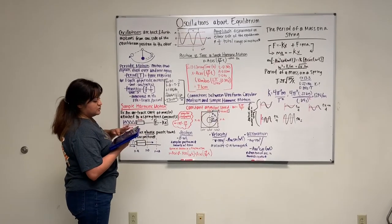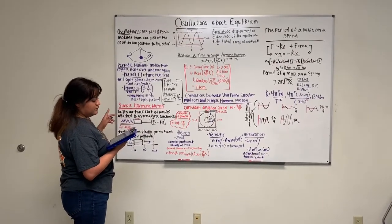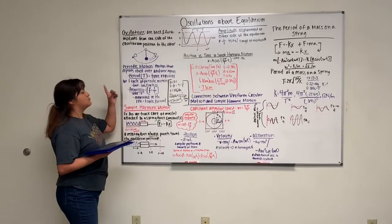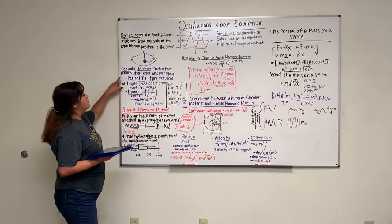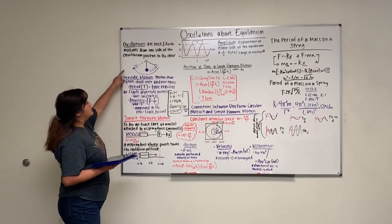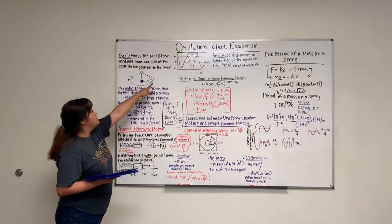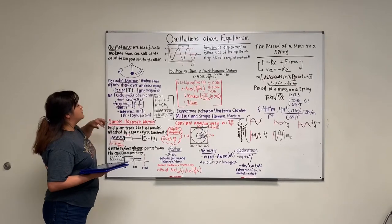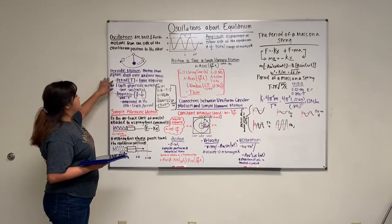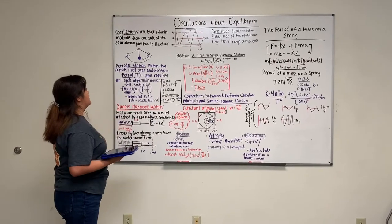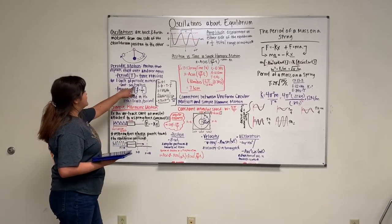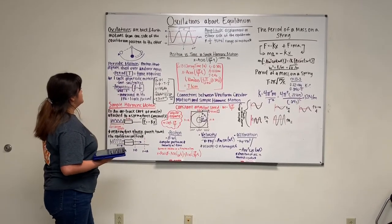In order to measure a periodic motion, one measurement is one cycle. How to measure one cycle is a period. So if you were to move from here to the other side, it would be considered a cycle. A period is the time required for one cycle of periodic motion. The unit is seconds per cycle, which equals seconds (s).